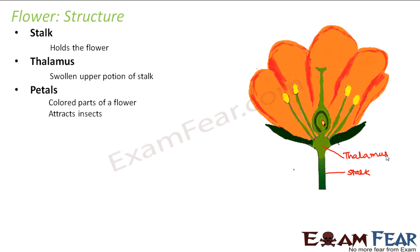Next are the petals — these are the colored parts of the flower. They come in a variety of colors depending on the flower; for example, a rose can be red, orange, yellow, and many other colors. These colored parts attract insects towards the flower. Petals also act as a protective organ, covering the reproductive organs which are present inside the flower.